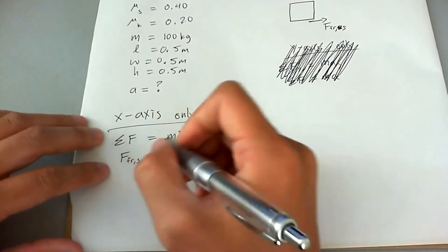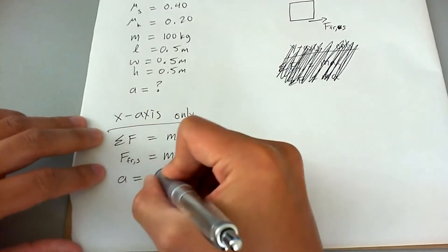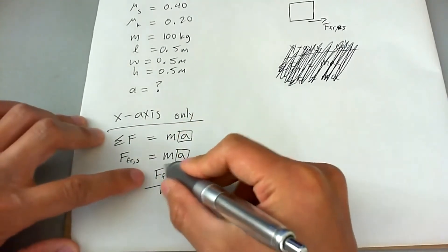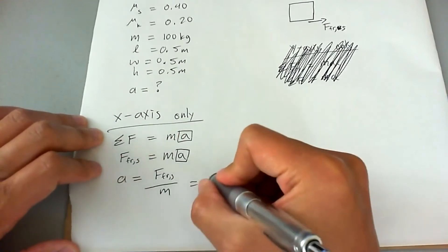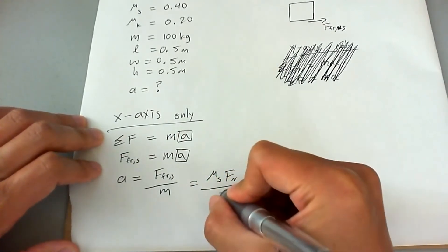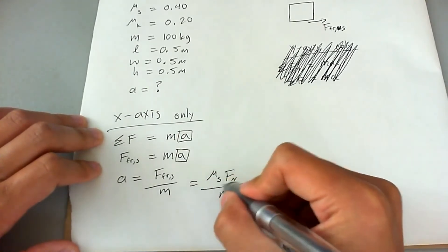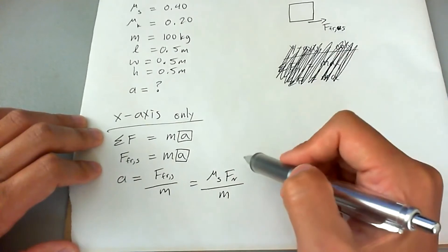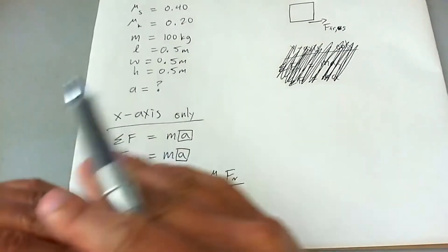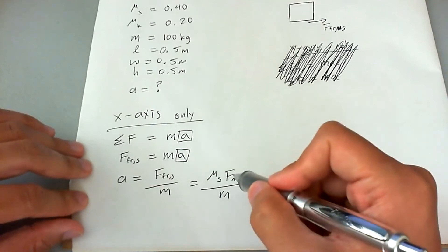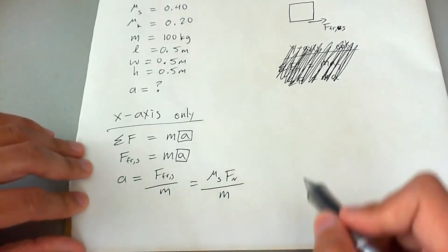We're going to say A is equal to frictional force static divided by M. But then further breaking this down, this ends up being μs times normal force divided by M. This equation here is the maximum static friction that's going to be applied to the box before it breaks the chemical bonds and starts sliding. So this is the max static friction, which is what the question is asking for.